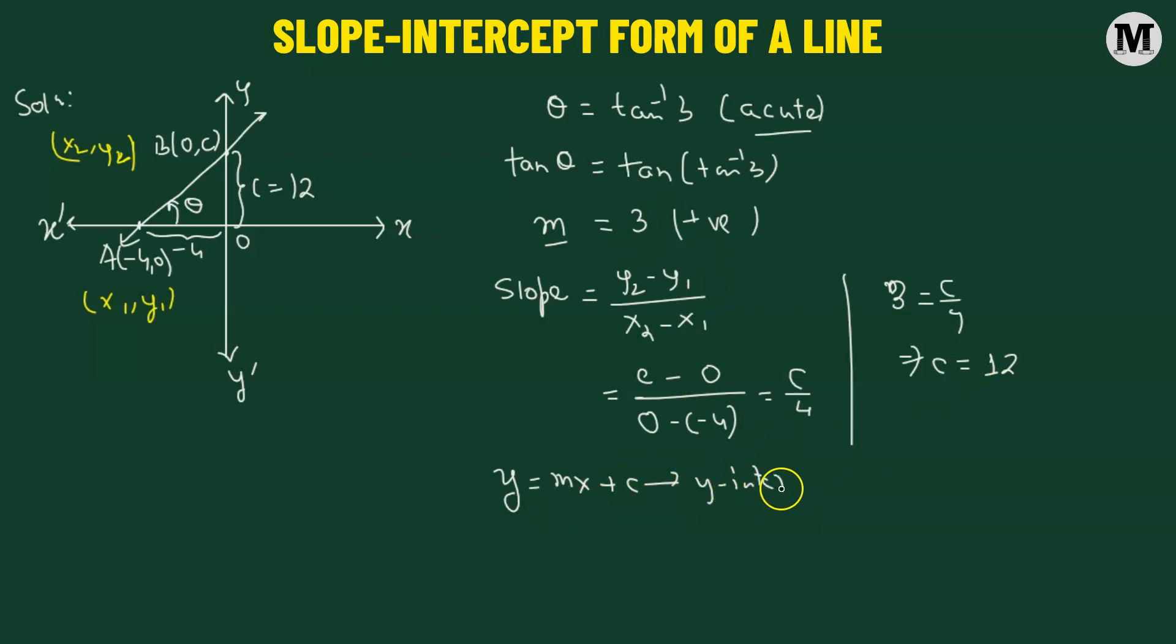So the y-intercept value, which is 12. Now let's replace the m value with 3, such that we get 3x, and the C value with 12. And this is going to be the required equation of the line.